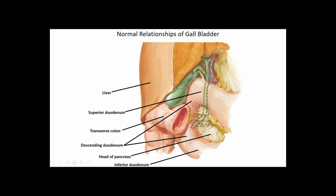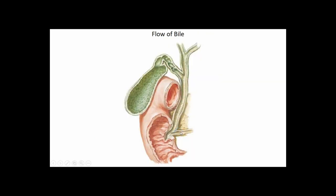The bile ducts are posterior to the duodenum, and the pancreatic head is nestled in the C-curve of the duodenum from the superior through descending to inferior aspects. The transverse colon sits immediately anterior to the duodenum, making it a bit tough to find in the anatomy lab. Bile is produced by hepatocytes and released into tiny bile canaliculi that consolidate into larger bile ducts, reaching the left hepatic duct from the left lobe and the right hepatic duct from the right lobe, fusing to make the common hepatic duct.